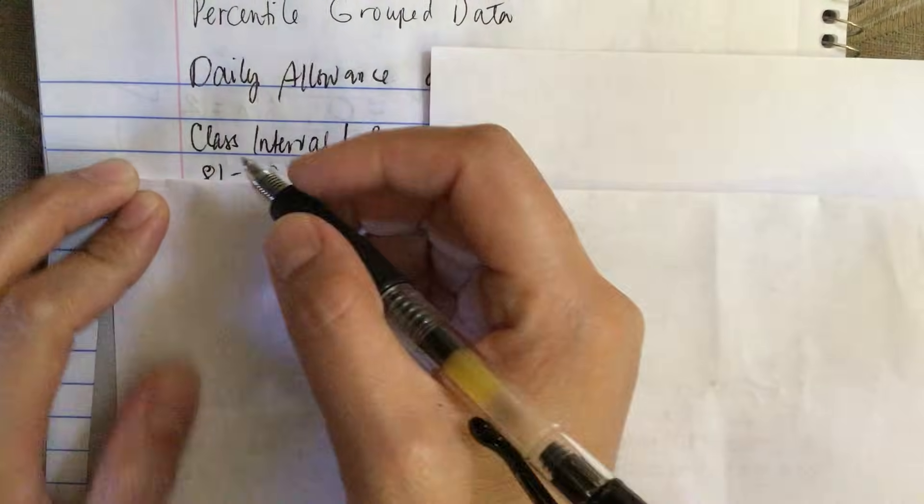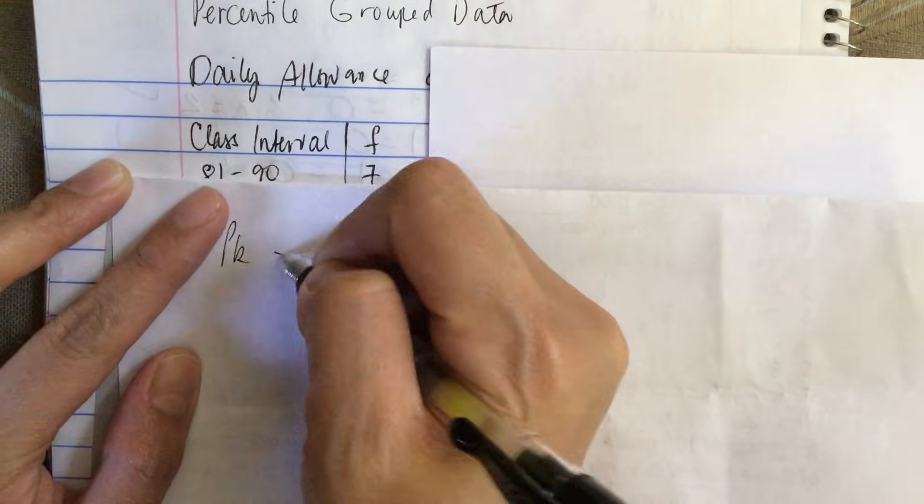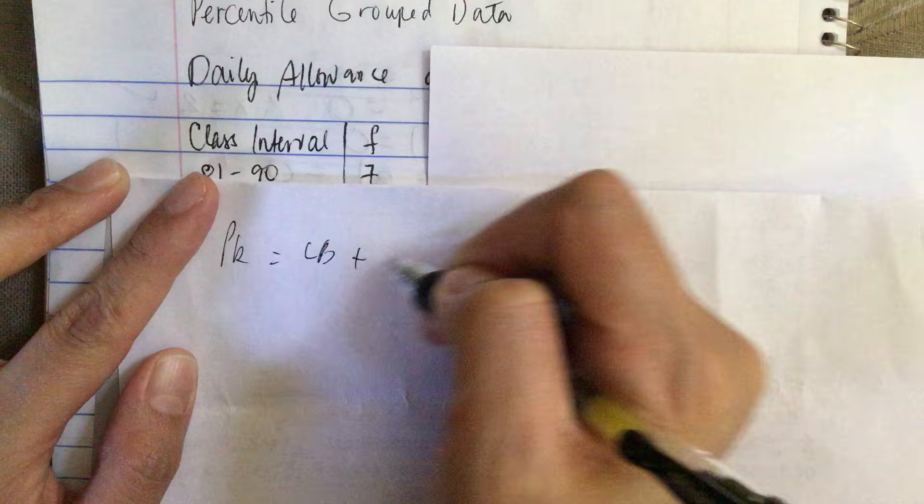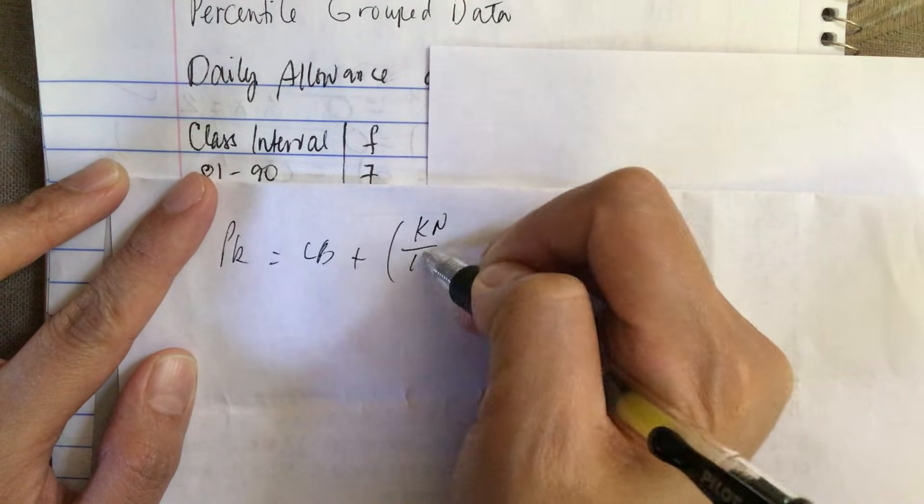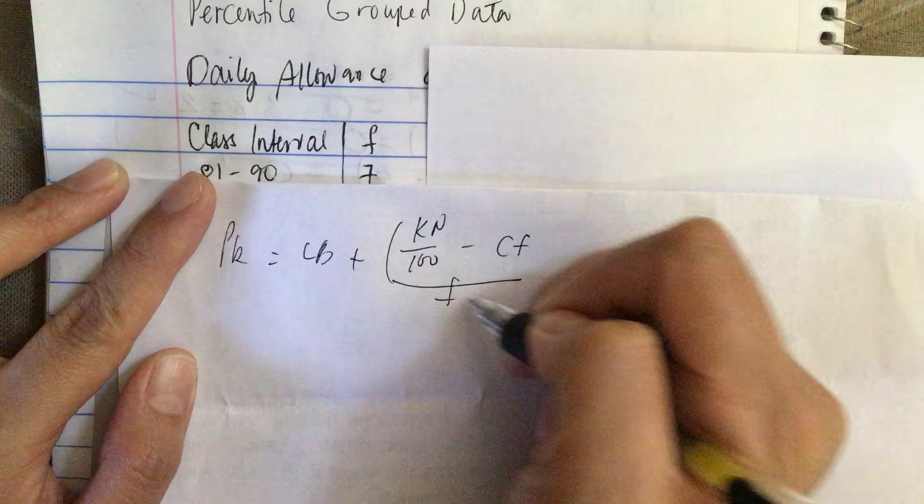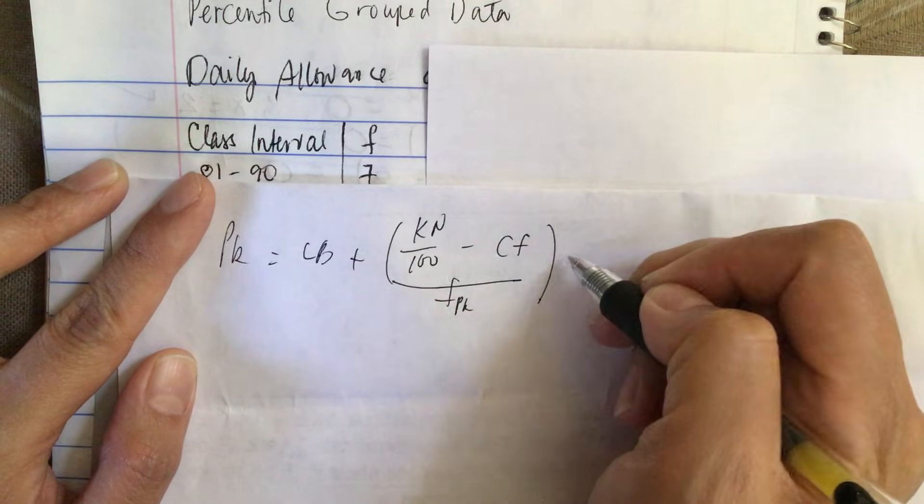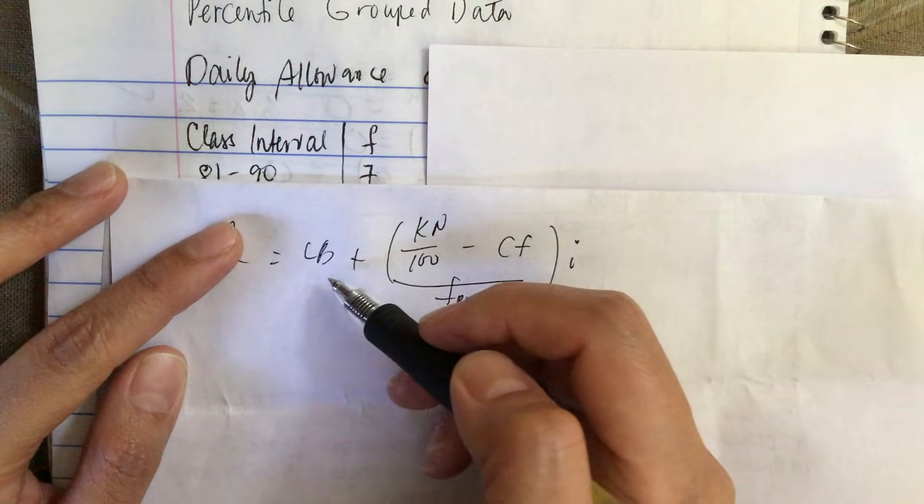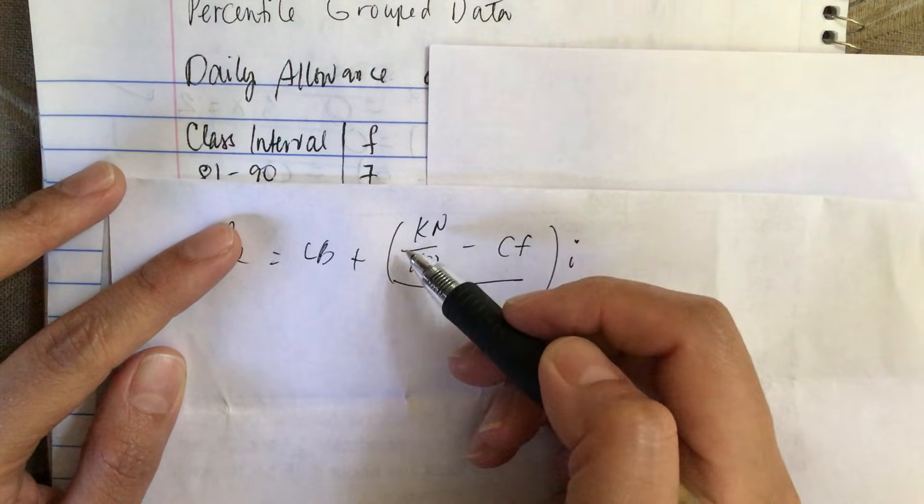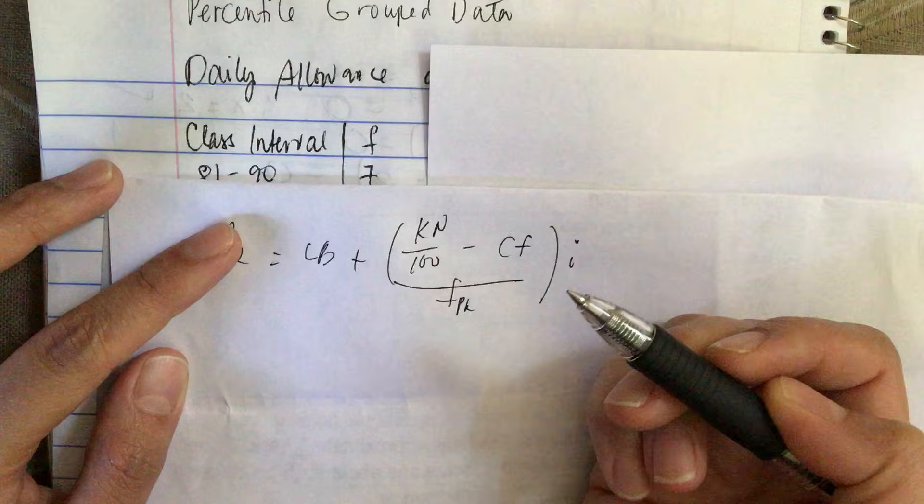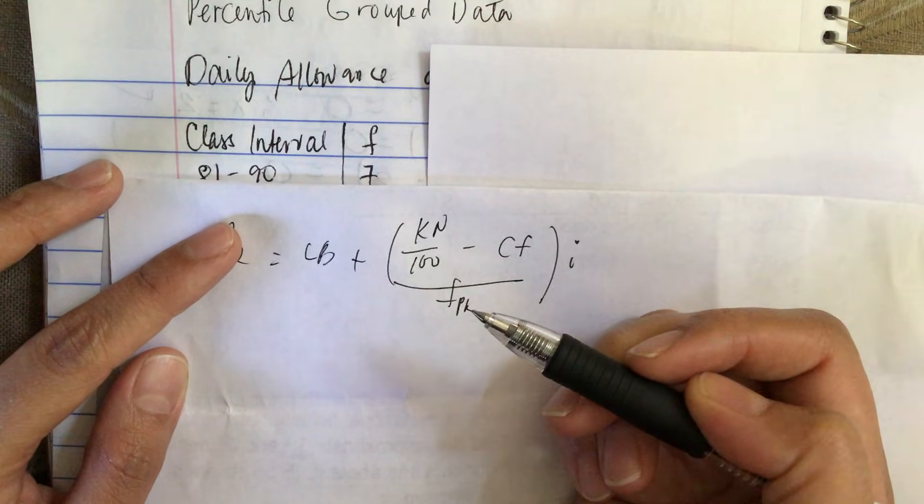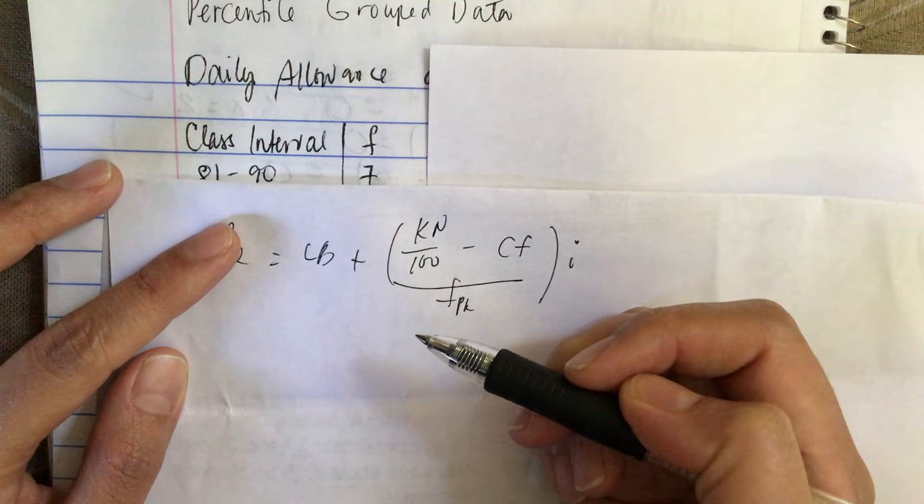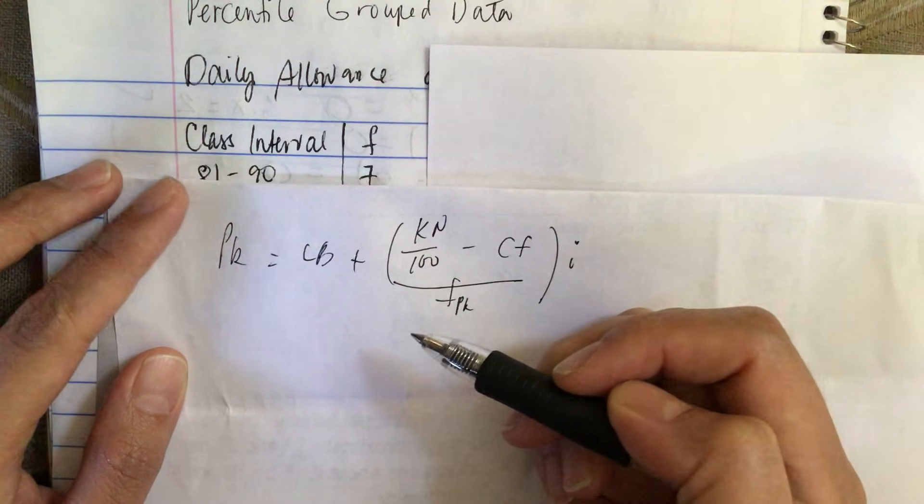The formula that we're going to use is P_k equals the lower boundary plus (kn over 100 minus cf) over f_pk, multiply by i. Now LB is the lower boundary, k is the nth percentile, i is the size of the class interval, f_pk is the frequency of the percentile class.